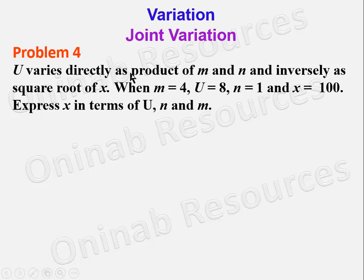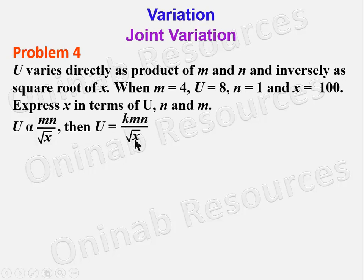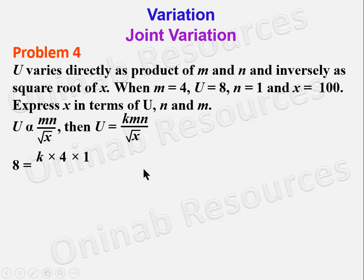Solution: u ∝ mn/√x, so u = kmn/√x. Substituting u = 8, m = 4, n = 1, x = 100: 8 = k(4)(1)/√100 = 4k/10.